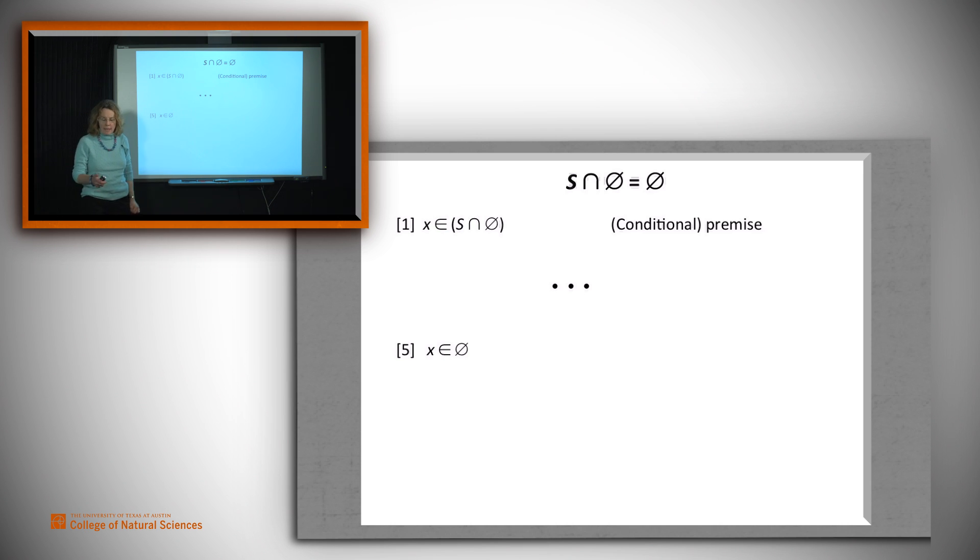But if we can do that, we're going to come back to how we do it later. Let's look at the scaffolding for the rest of the proof. Then we use conditional discharge to argue that one and five together enable us to conclude that x being in the first set guarantees that it's in the second set.